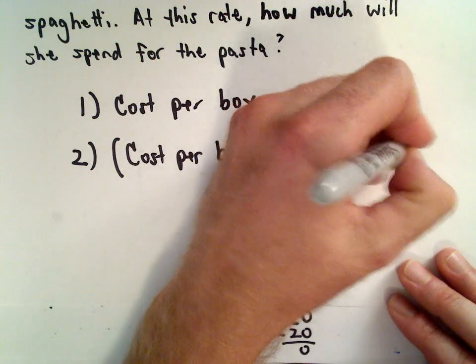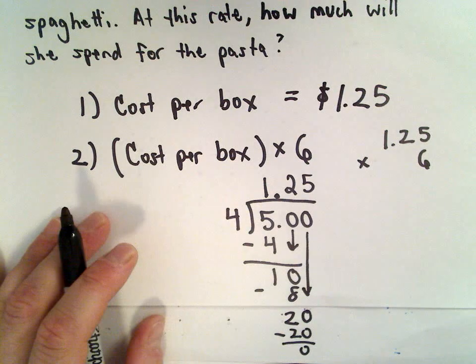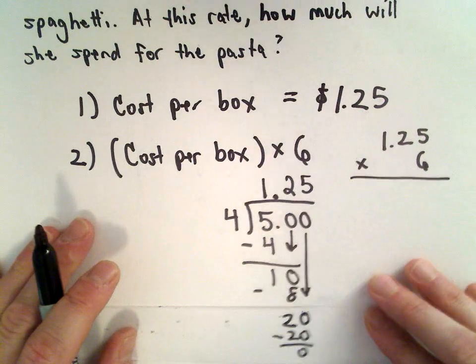So now I'm just going to take that cost per box and multiply that by six. Again you've got your calculator you could do 1.25 multiplied by six. I'm just going to do it by hand.